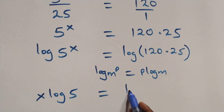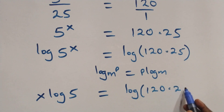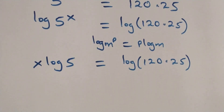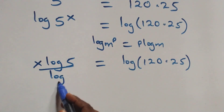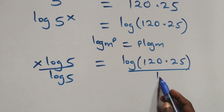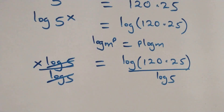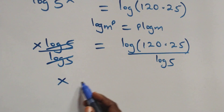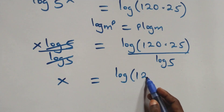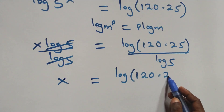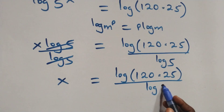We have x times log 5 equals to log of 120 times 25. Then here we divide both sides by log 5 — divide this side by log 5 and also divide this side by log 5. The log 5 cancels each other and we have x equals to log of 120 times 25 over log 5.